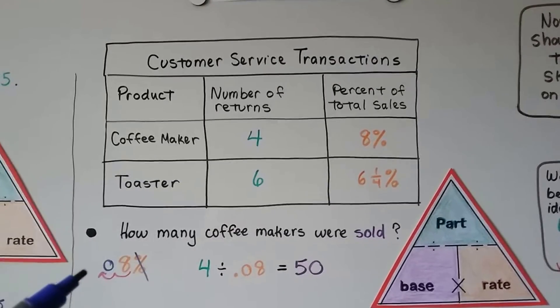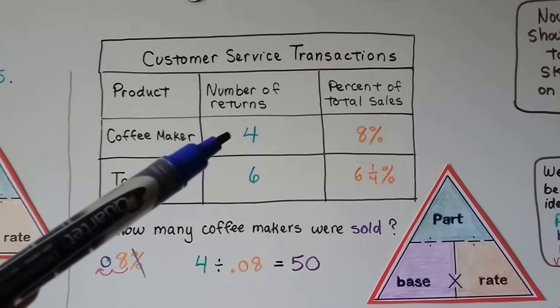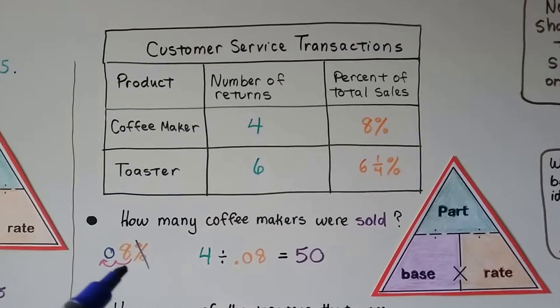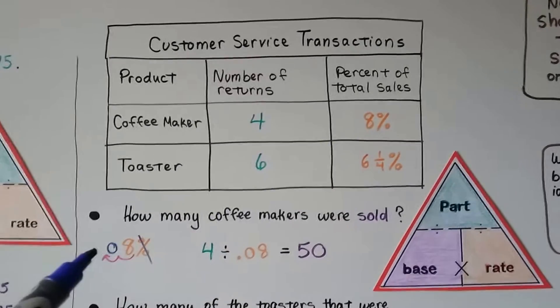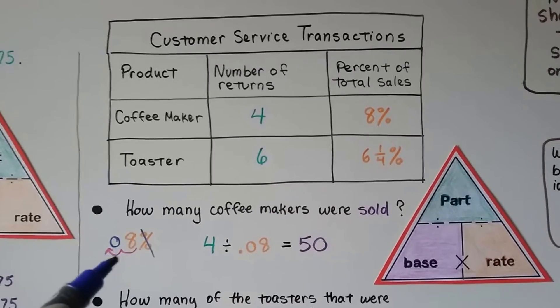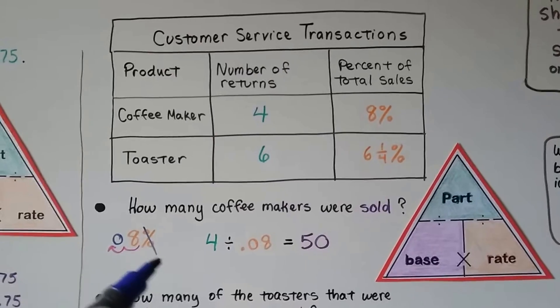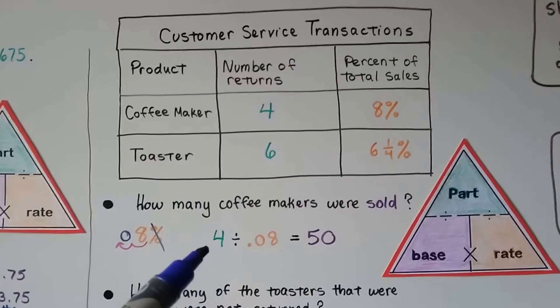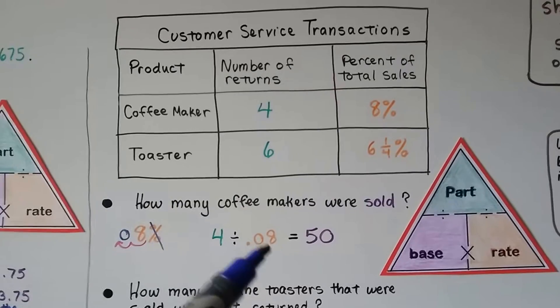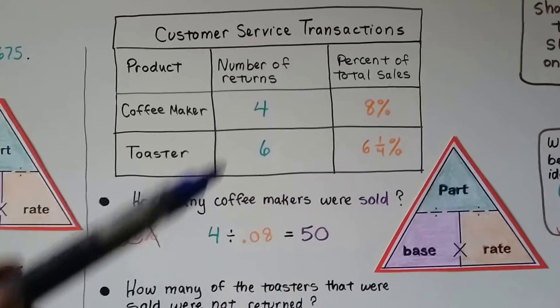Our first question is, how many coffee makers were sold? Well, if four were returned and that's 8% of the sales, we do turning this 8% into a decimal. So we get .08 because we moved it over two hops and got rid of the percentage sign. And then we do the part divided by the rate. We do the four divided by .08 and we get a 50. So we know that 50 were sold with 4 returned.